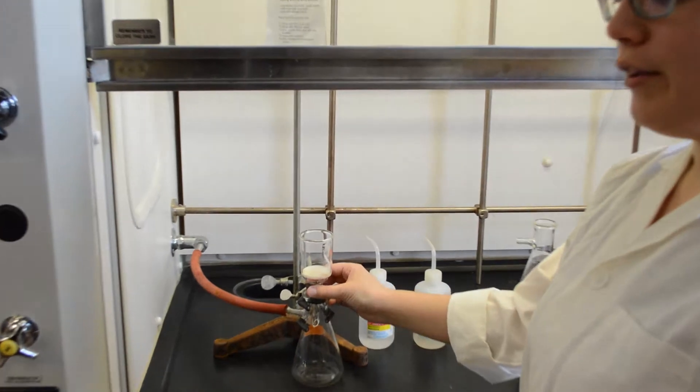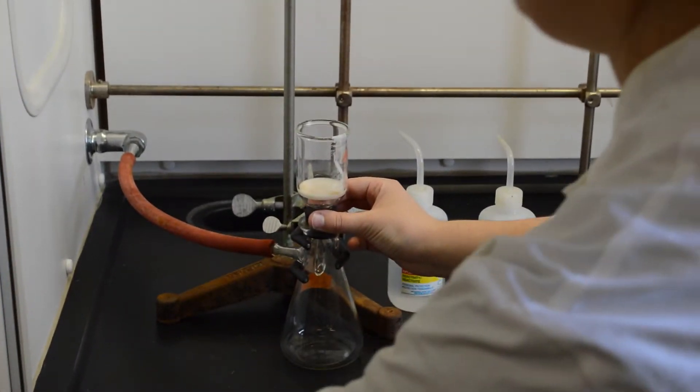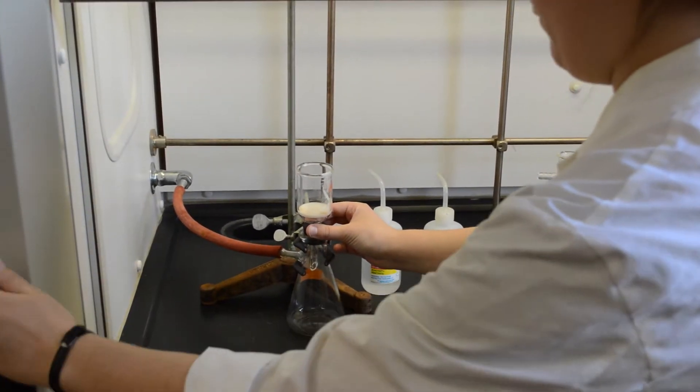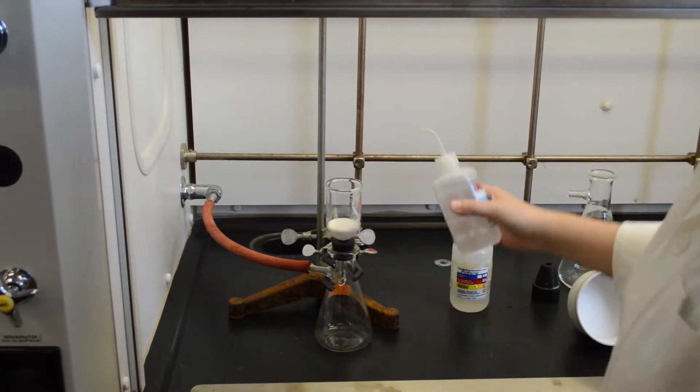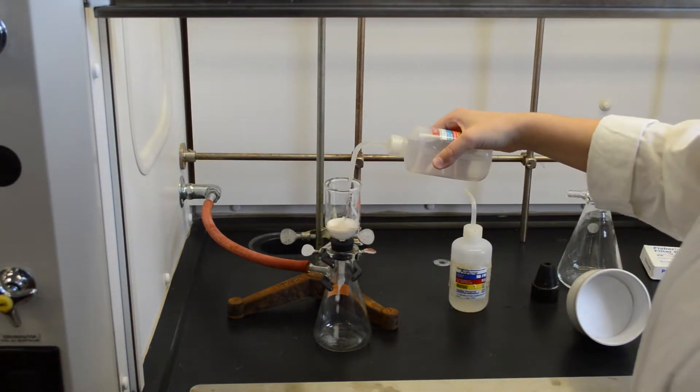Put the sintered glass funnel on the filter flask and turn on the vacuum. And rinse the flask with some HCl solution.